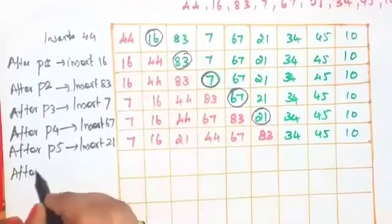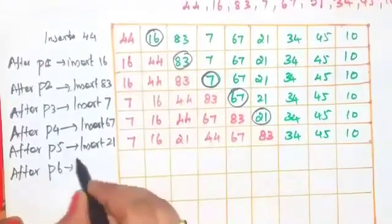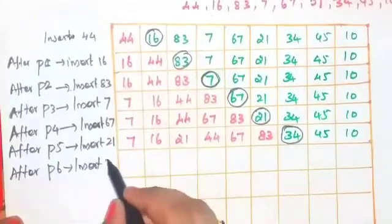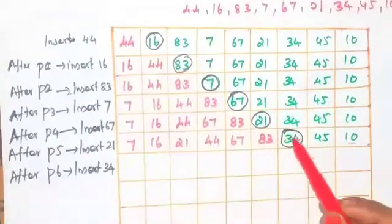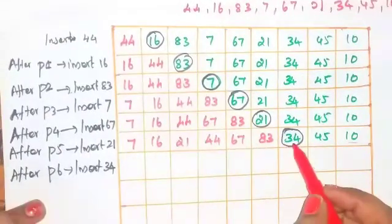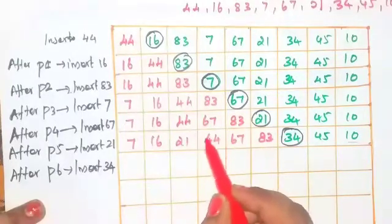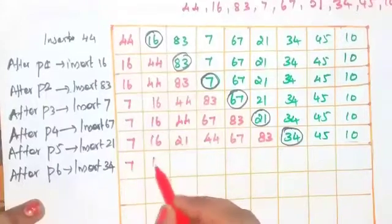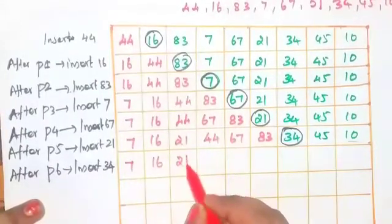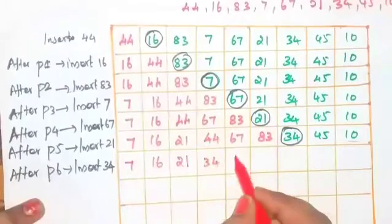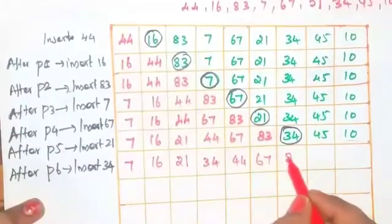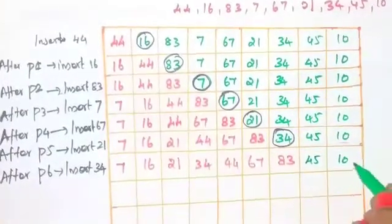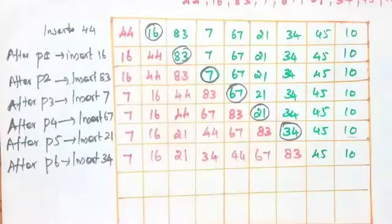After pass six, insert the next element: 34. Compare 34 with the sorted elements — 34 is greater than 21 and smaller than 44. So, insert 34 between them: 7, 16, 21, 34, 44, 67, 83. Write the remaining elements: 45 and 10. This is pass seven.